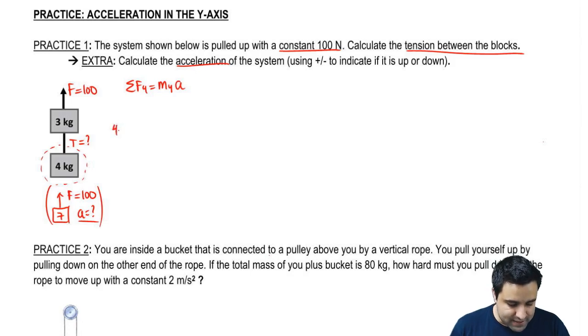If you were to draw a free body diagram for the four, four has mg pulling it down, and it has a tension pulling it up. And this mg here is 9.8 times four, so it is 39.2.